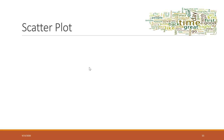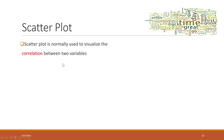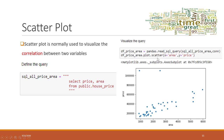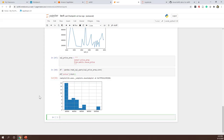Scatter plot is another type of chart that we use a lot. It is used to visualize the correlation between two variables. Here we use the same query selecting price and area, and we want to see how the price changes when the area changes. We load the data to our DataFrame and use the plot.scatter function, setting x as area and y as price. We can see there is a very strong positive relationship between price and area — when the house area becomes bigger, the price becomes higher.